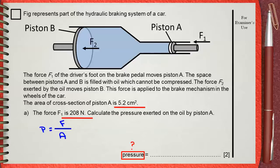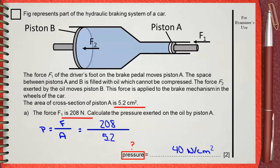Force is 208, area is 5.2 cm². This gives the pressure, which is 40. In this case, you cannot say Pascal — your unit will be N per cm², because your area is in cm², and this is not a standard unit of area.